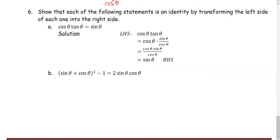Example 6: we're going to show that the left-hand side equals the right-hand side. Starting with the left-hand side for part A, we have cosine theta times tangent theta. We are going to use appropriate identities applied to this problem and then simplify to get the same term as the expression on the right-hand side. So cosine theta times tangent theta is equivalent to cosine theta times sine theta over cosine theta. After multiplying, cosine theta and cosine theta can be reduced. Finally, the expression simplifies to sine theta, which is the same expression as the right-hand side.